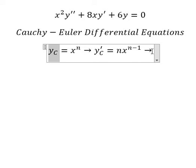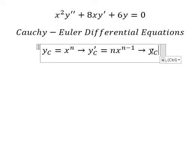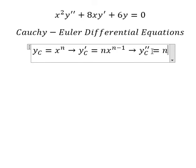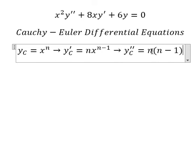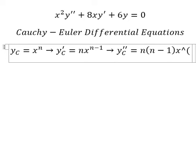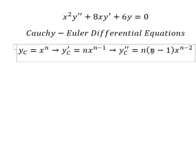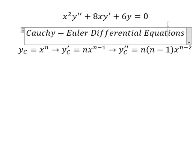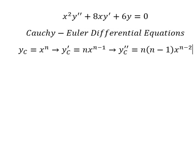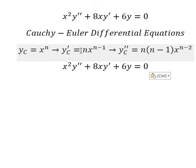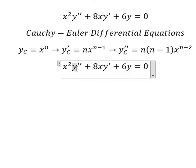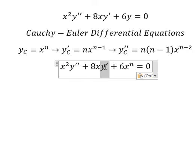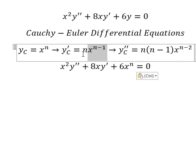The second derivative gives us n multiplied by n minus 1, times x to the power of n minus 2. We now substitute this into the equation.